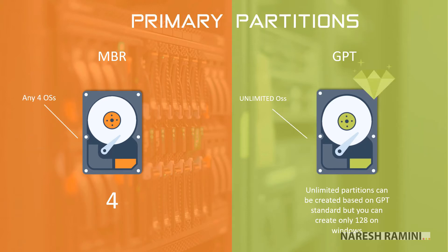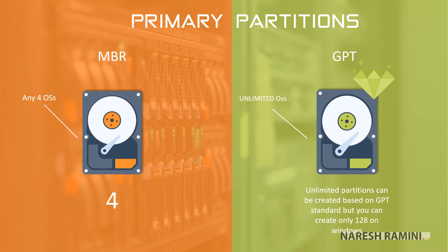One can only create 4 primary partitions on an MBR disk, while one can create unlimited primary partitions on a GPT disk. But if you want to use Windows operating systems, Windows limits us to create 128 primary partitions. It is always the OS that can impose limitations on the number of partitions one can create in GPT's case. MBR limiting us to only 4 primary partitions means one can just install 4 operating systems on an MBR disk, and 128 operating systems on a GPT disk if you are using Windows OS.